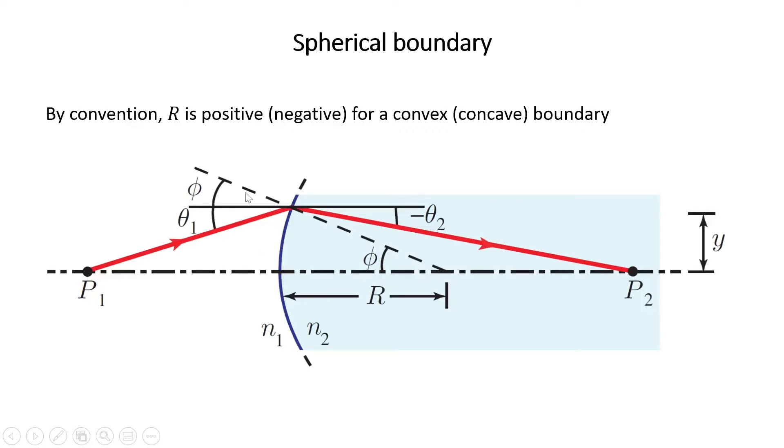If we continue the normal to medium 2, it crosses the optical axis at the center of curvature, and the angle with the optical axis is phi, as shown here. Also, the height of the incident point is y. This is y, and this height is also y.